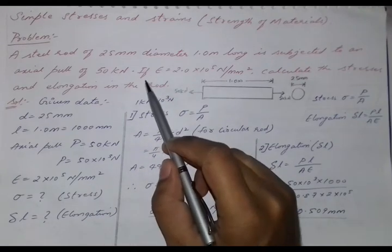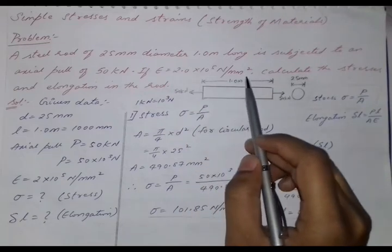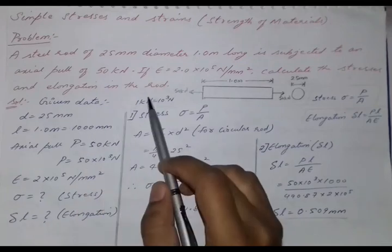Next, if capital E, that is Young's modulus, is given as 2.0 into 10 power 5 N per mm square, calculate the stresses and elongation in the rod.